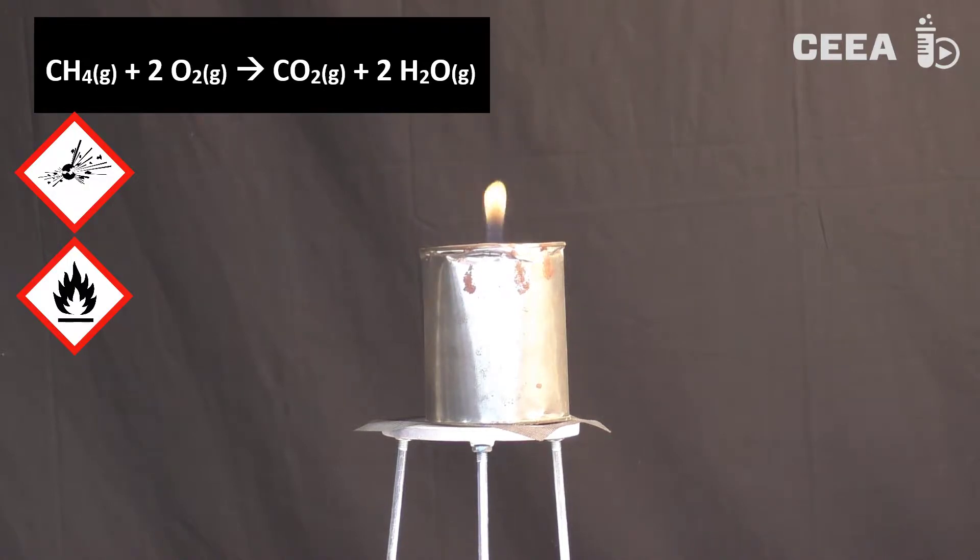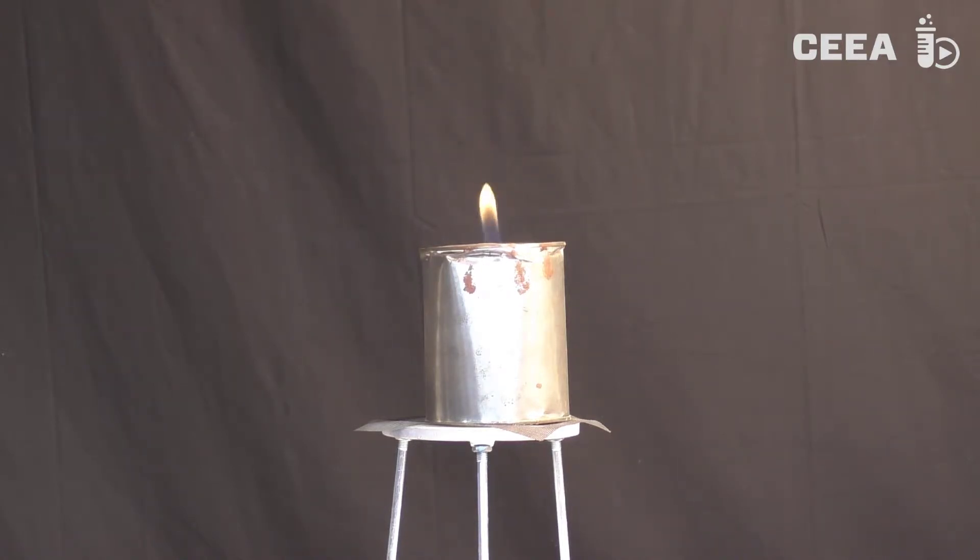The gas will burn for some time, while air flows into the can through the hole in the bottom. The flame will become smaller and smaller, as the gas burns to the point where the gas is exhausted.